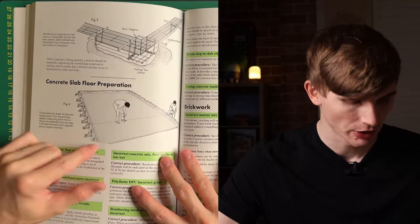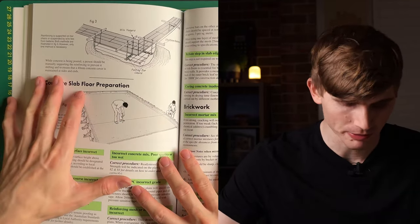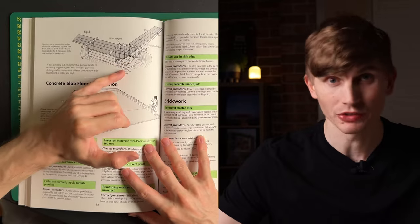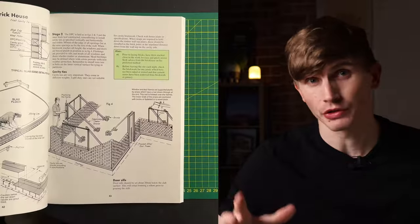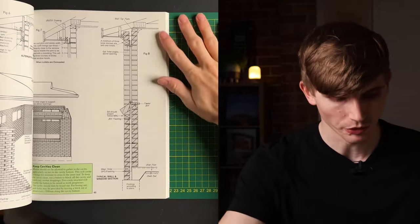But it also covers nuance like slab preparation, so you can see all the formwork being built up around where the slab is going to be, as well as how the formwork is actually set so that the reinforcement is at the right height. Love these kind of illustrations, and it also does go into double brick construction as well with some really great details.